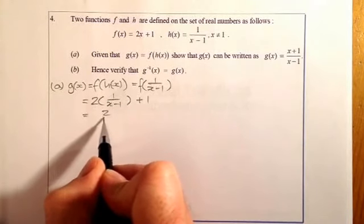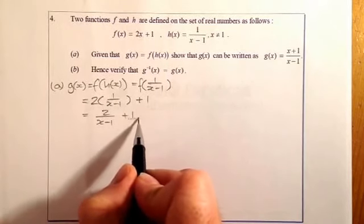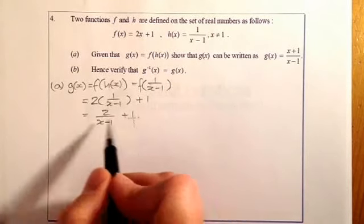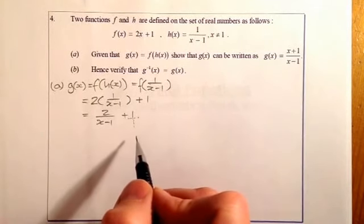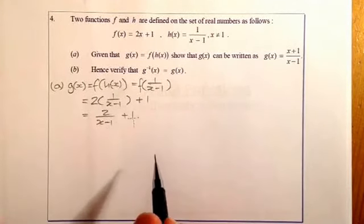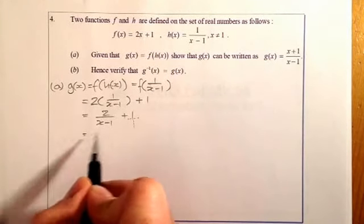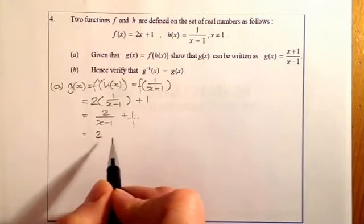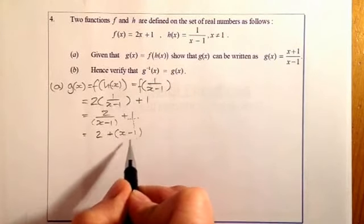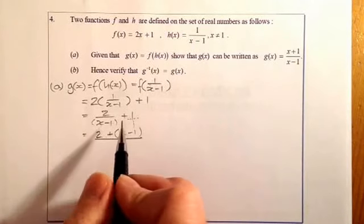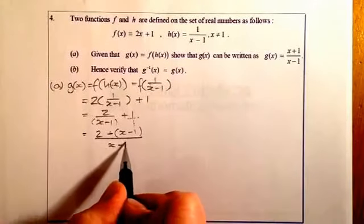Multiplying this out gives 2 all over x minus 1, plus 1. I'm going to imagine that 1 has a 1 underneath — 1 over 1. Then I'm just going to do a cross multiplication and multiply the denominators, or kiss and smile as you might know it. So that's going to be 2 times 1 is 2, plus x minus 1 in the bracket. Then I multiply the denominators, giving me x minus 1 on the bottom.